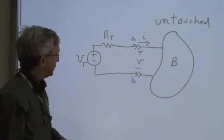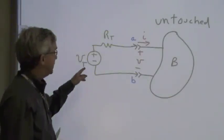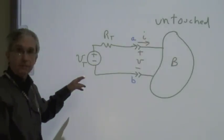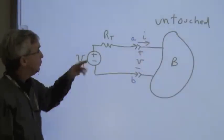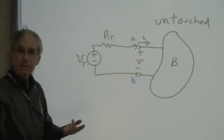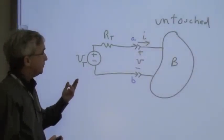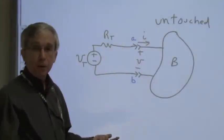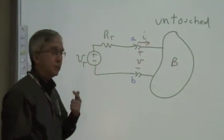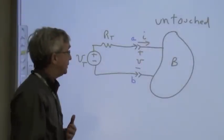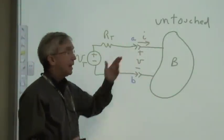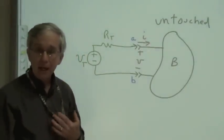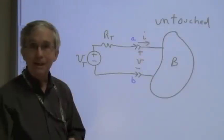Let's redraw this circuit to show that part A has been replaced by one voltage source — we'll call that V sub T for V-Thevenin — and one resistor, R sub T for R-Thevenin. It would be really nice to replace a complicated part A by one voltage source and one resistor, but please convince me that V and I would indeed remain unchanged, and tell me how to get R-Thevenin and V-Thevenin.